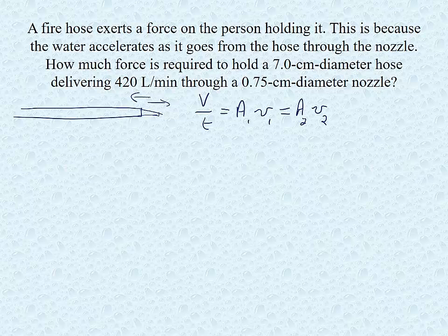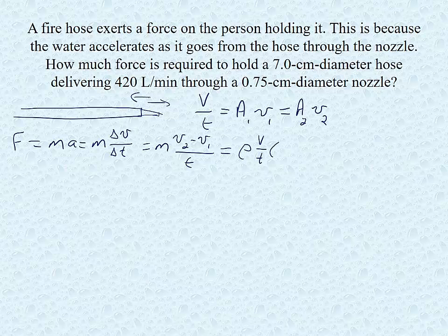We want to use Newton's second law so f equals ma. Well in this case our a we don't want to think about it in terms of a but we want to think about it in terms of delta v over t. So v2 minus v1 over t. And I don't want my mass to play here. Instead I want my densities. So then I can switch this up again and say that this is density times my volume flow rate times v2 minus v1.